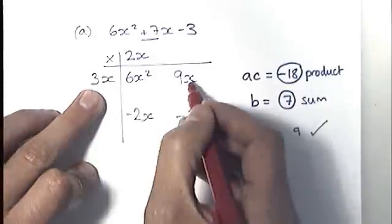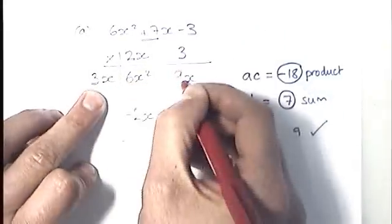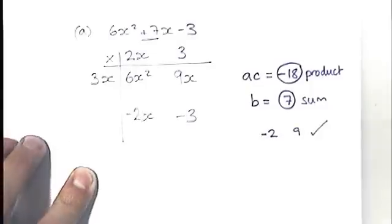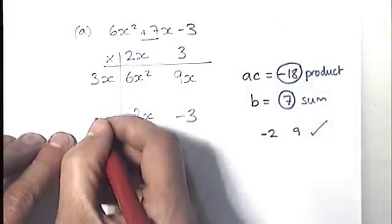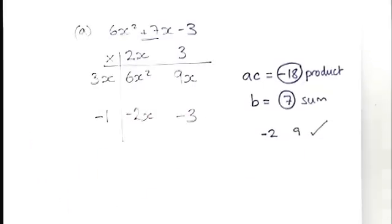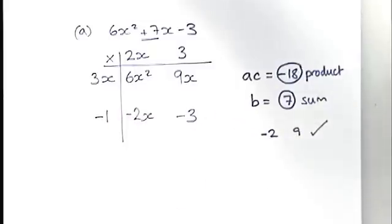Then I'm going to look at this term here, 3x times by what? Well, I'm going to need a 3 to make the 9, and I don't need any more x's. Then I'm going to look at this term here, 2x, and I want to make minus 2x, so I need a minus 1. And then, as a last check, I just multiply 3 by minus 1, and I get a minus 3.